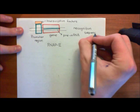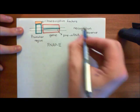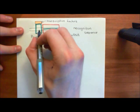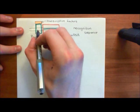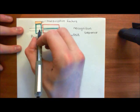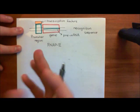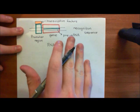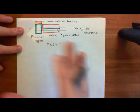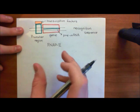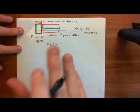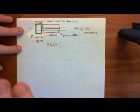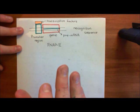If your promoter region contains the recognition sequence for a specific transcription factor, then that transcription factor will be able to bind to that recognition sequence within the promoter region. So far, what we've got is that transcription factors bind to the promoter regions of a huge collection of different genes. What they will then do is alter the affinity of those promoter regions for binding to RNA polymerase 2.